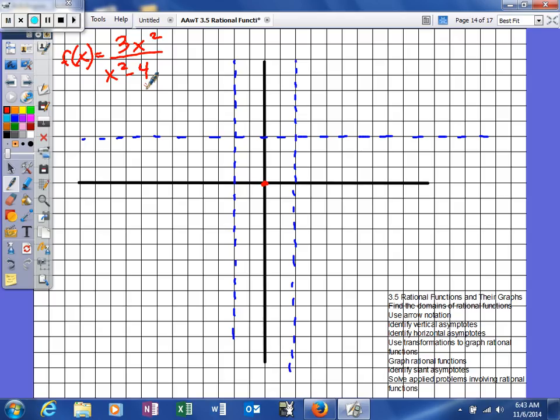Okay, what we're going to do now is we're just going to plug in some values. So what will help me, I'm going to plug in 1 and see what I get. When I plug in 1, I will get 3 over negative 3, so I get negative 1.